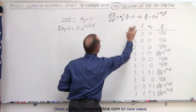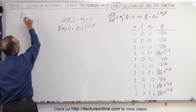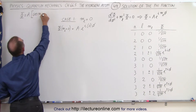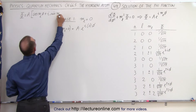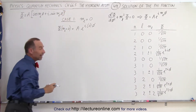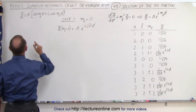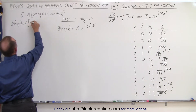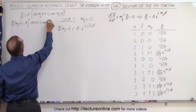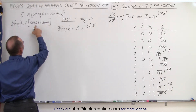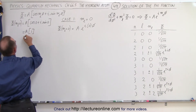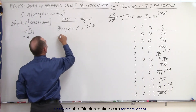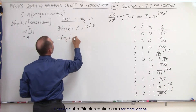We can also write that function in terms of cosine and sine: a times the quantity cosine of m sub l phi plus i times the sine of m sub l times phi. Setting m sub l equal to zero, the function becomes a times the cosine of zero plus i times the sine of zero. Since the sine of zero is zero and the cosine of zero is one, this simplifies to a times one, which is simply equal to a.